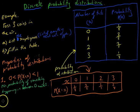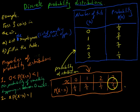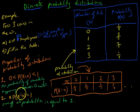The second property of probability distributions is that the sum of all of the probabilities must be equal to one. Something has to happen, so if we add up all the probabilities — one-eighth plus three-eighths plus three-eighths plus one-eighth — we get one. If these two properties aren't met, then you're not dealing with a discrete probability distribution.